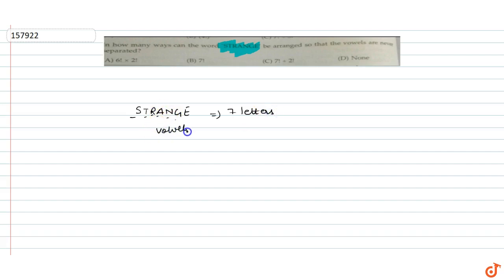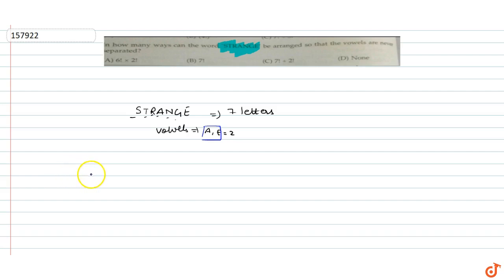In these 7 letters, the vowels are A and E — that is two vowels. To ensure they are never separated, we treat A and E as a single unit. So now instead of 7 separate letters, we have 6 units: positions 2, 3, 4, 5, 6 with the vowel unit.